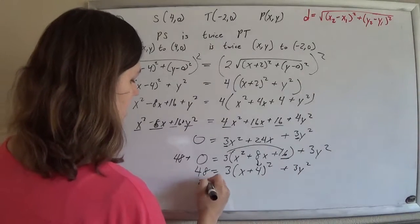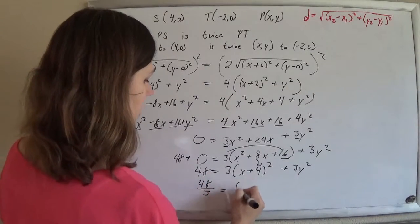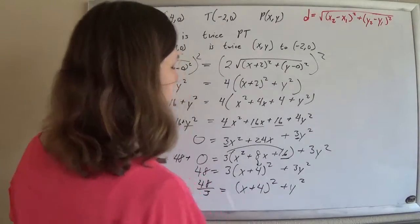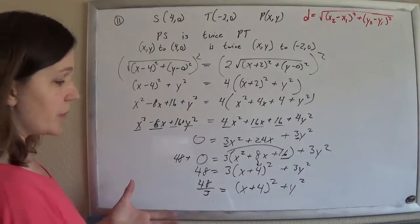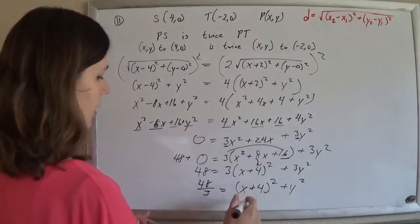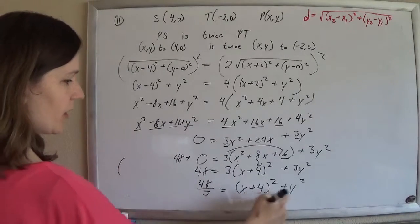So if I divide everybody by 3 just to make it look pretty, (x+4)² plus y². And so I can see that it's a lovely circle with the center of (-4, 0).